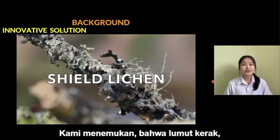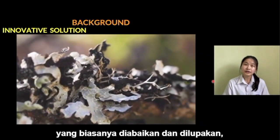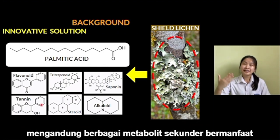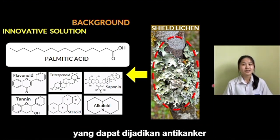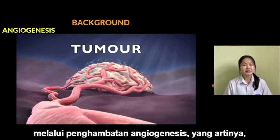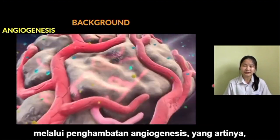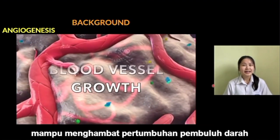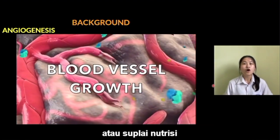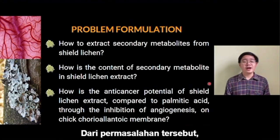Therefore, we found an innovative solution. We found that sheathlichen, which is usually just ignored and often overlooked, contains useful secondary metabolites that can be beneficial as an anti-cancer through angiogenesis inhibition, meaning it could block the growth of blood vessels or nutrient supply needed for cancer growth.